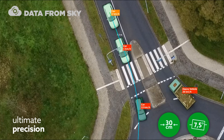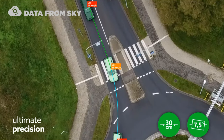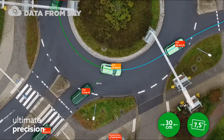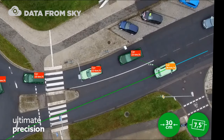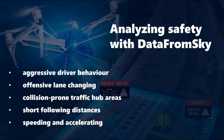We have trained a deep neural network to detect and recognize objects in the image with very high precision. Accuracy is the key factor for evaluating any traffic node in terms of safety. Precise bounding boxes, speed and acceleration data, as well as distance measuring or complete trajectory for each road user — all are valuable inputs for safety measurements. For example, the analysis includes aggressive driving behavior thanks to trajectory-driven design, offensive lane changing, identification of collision-prone hub areas or dangerous spots, detection of short following distances and headways, and detection of speeding or heavy acceleration.